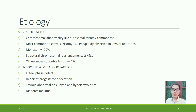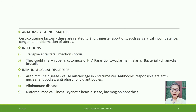Endocrine and metabolic factors include luteal phase defect with deficient progesterone secretion, thyroid abnormalities such as hypo- and hyperthyroidism, and diabetes mellitus. Anatomical abnormalities — cervico-uterine factors — are related to second trimester abortions, including cervical incompetence and congenital malformation of the uterus.